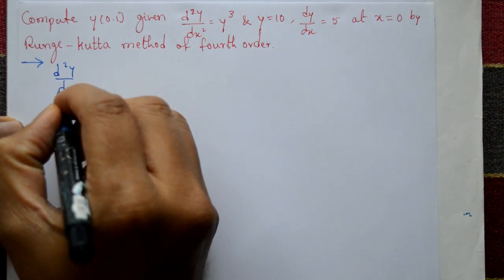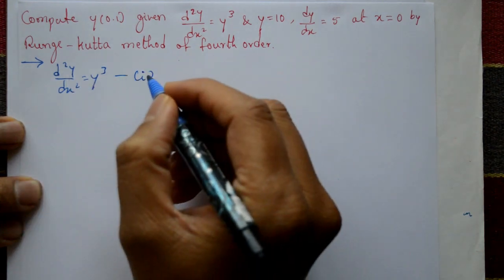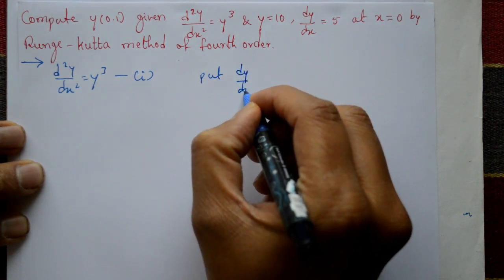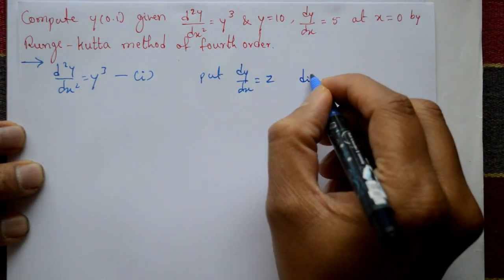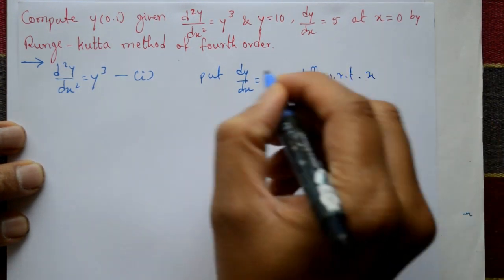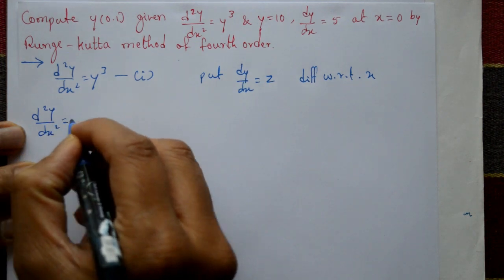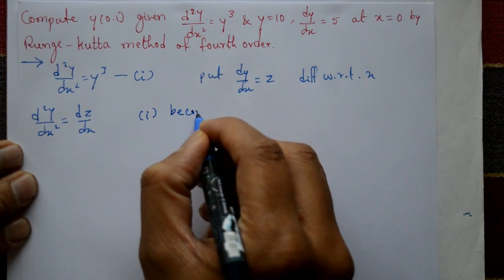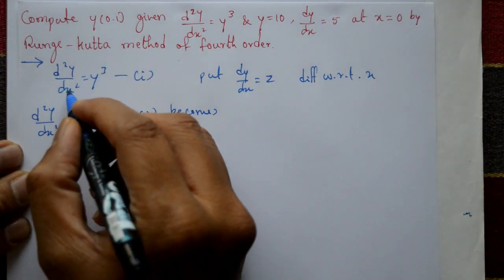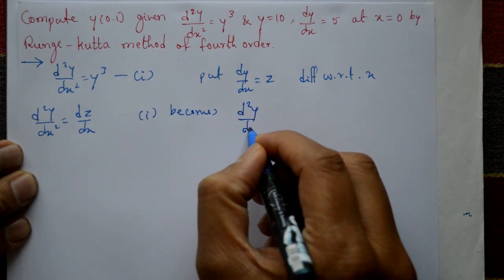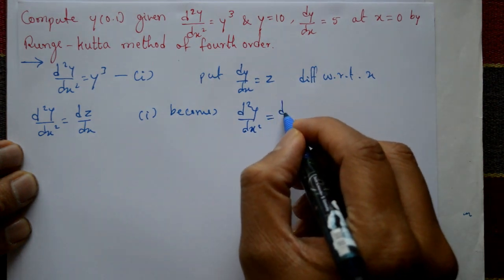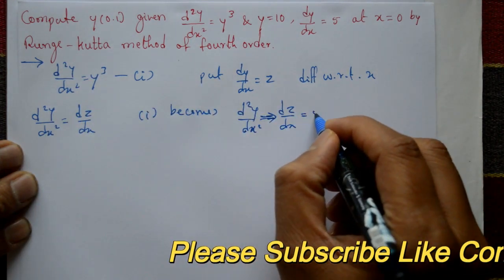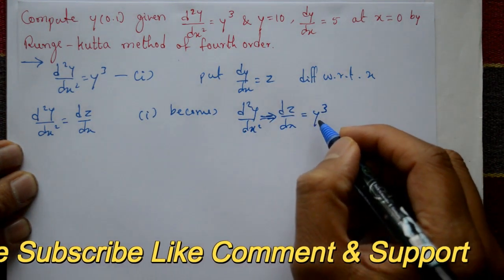The equation is d²y/dx² = y³ — call this equation (1). Now put dy/dx = z. Differentiating with respect to x gives d²y/dx² = dz/dx. So equation (1) becomes dz/dx = y³.